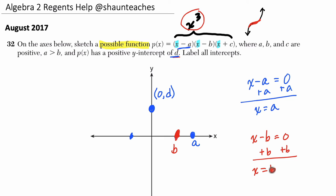So when x equals b, x minus b is 0 because b minus b is 0, and the whole polynomial is 0. We're right here, right at the root.